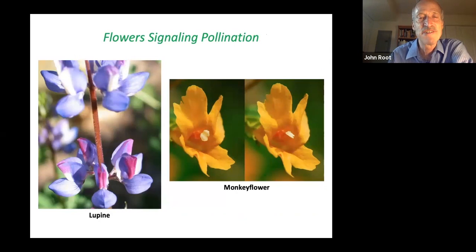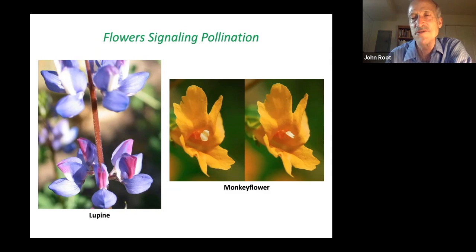The flower actually turns red when the nectar supply has been taken and it has been pollinated, as a sign to the bees to come to the uppermost flowers that don't have that red. On the monkey flower on the right, you'll see the first photo where the stigma is receptive and the second photo where the stigma is closed, and bees recognize that as a sign that there is no more nectar in that flower.